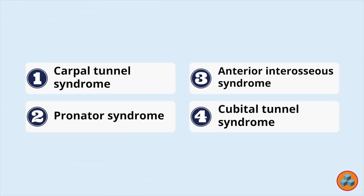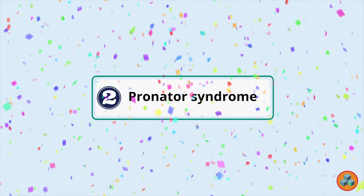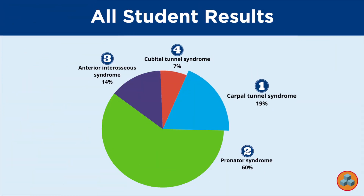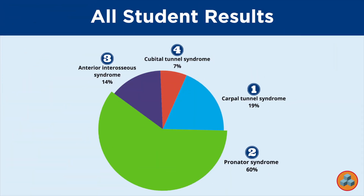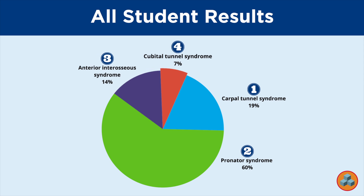The correct answer is option 2. Let's explore the all-student data. 19% of students selected option 1, carpal tunnel syndrome. 60% of students selected option 2, pronator syndrome, the correct response. 14% of students selected option 3, anterior interosseous syndrome. 7% of students selected option 4, cubital tunnel syndrome.